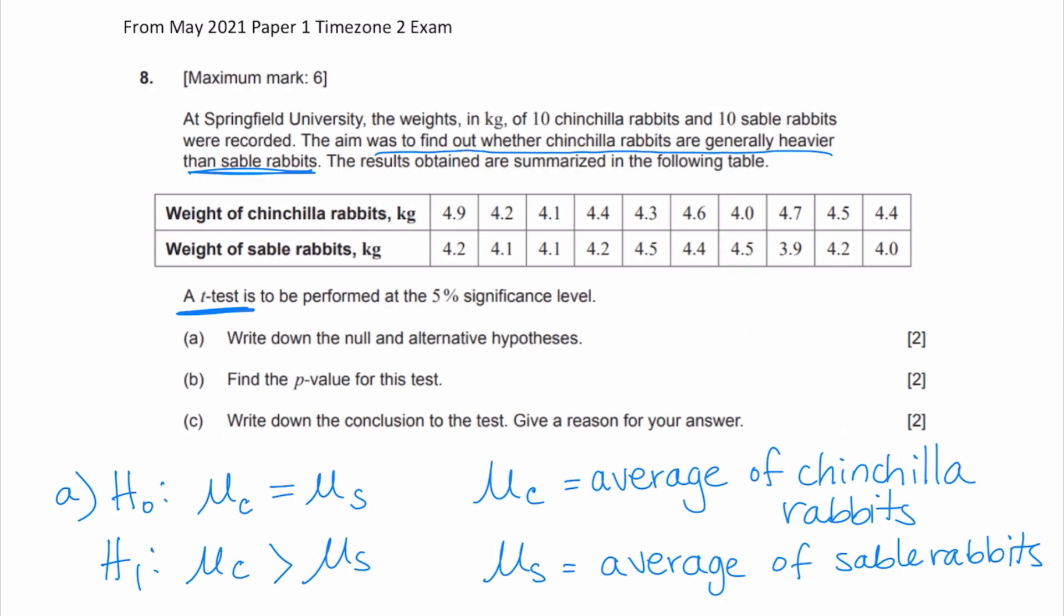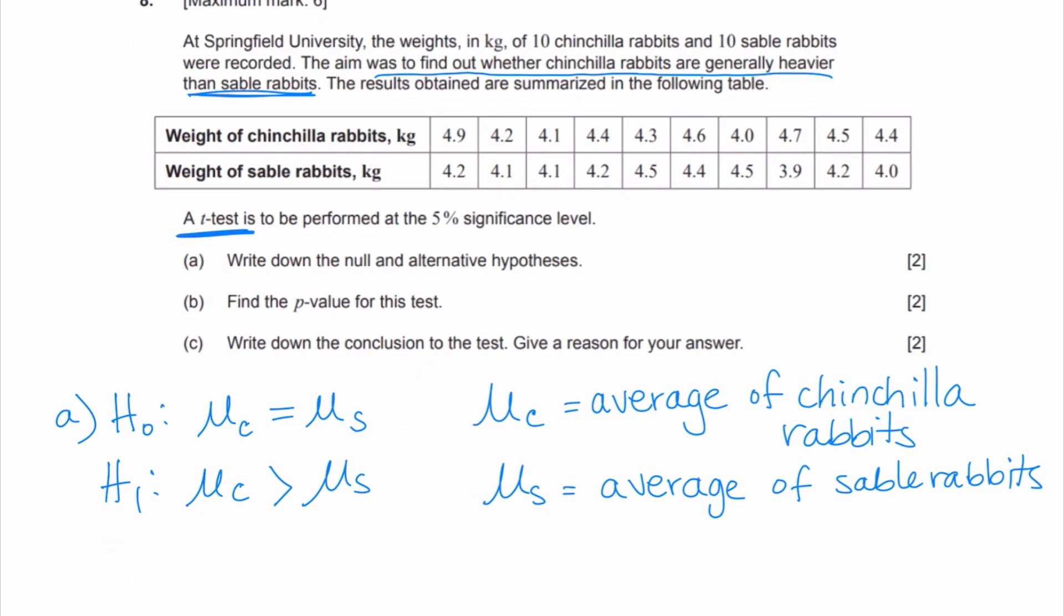You have to make reference to the population. It has to be in words that the population average or the population mean of chinchilla rabbits is the same as the population mean of the sable rabbits. Or you have to say something to the effect of the mean for all chinchilla rabbits is the same as the mean for all sable rabbits. Something to the effect of population. The word mean has to be in there if you are going to write this out in words, because this is a difference of means test.